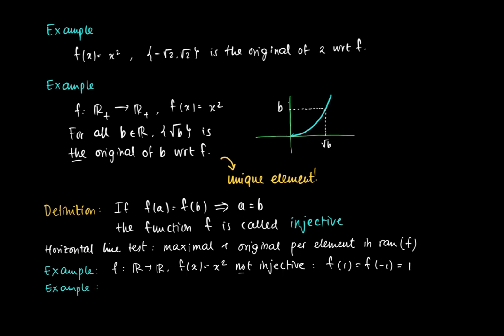If I restrict attention to the non-negative reals and look at f from ℝ⁺ to ℝ⁺ with f(x) = √x, then this function is injective. We can show it directly: if √a = √b, then squaring both sides gives a = b.